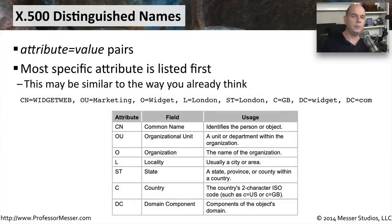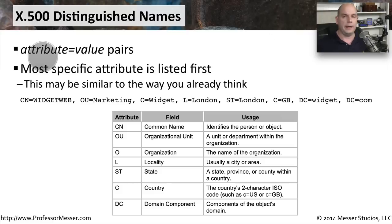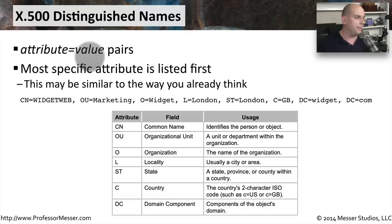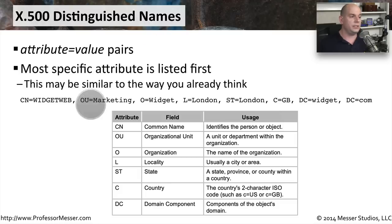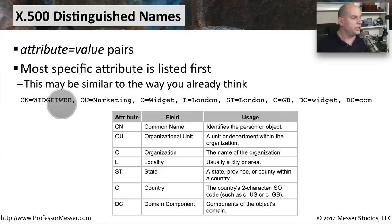X.500 has a very particular way of defining what's in the directory. It does this using distinguished names, putting information in pairs where you have an attribute, an equal sign, and then the attribute value. The most specific attributes tend to be specified first in the big list of these distinguished names. For instance, this is the distinguished name for a web server called WidgetWeb.